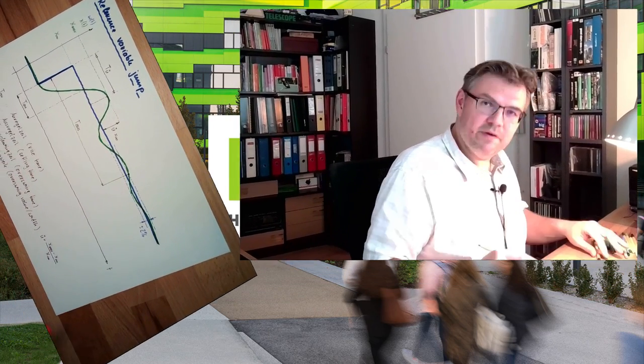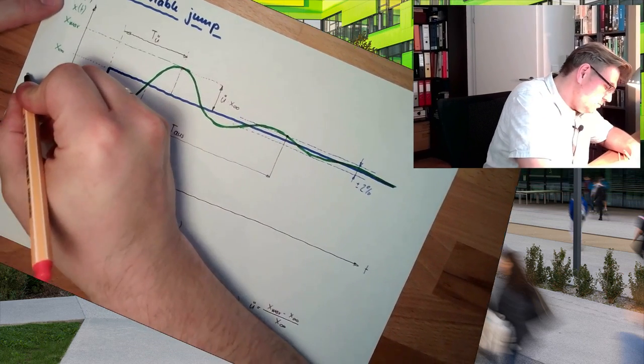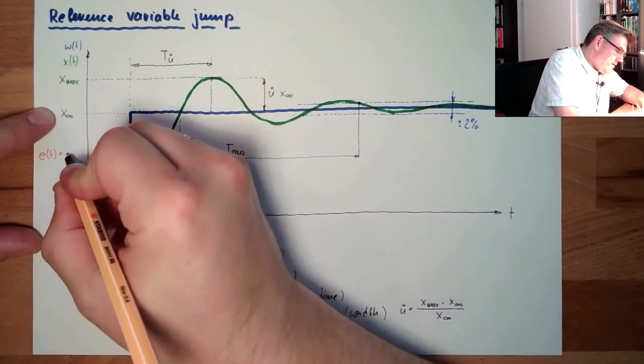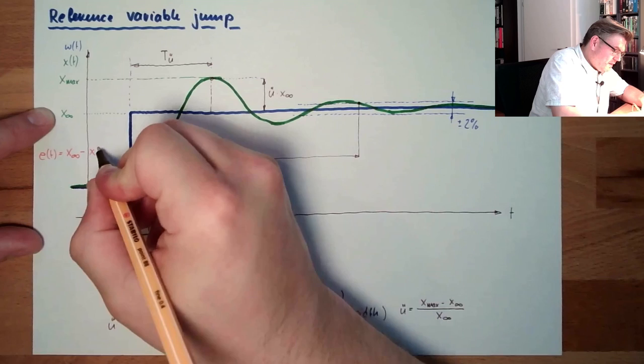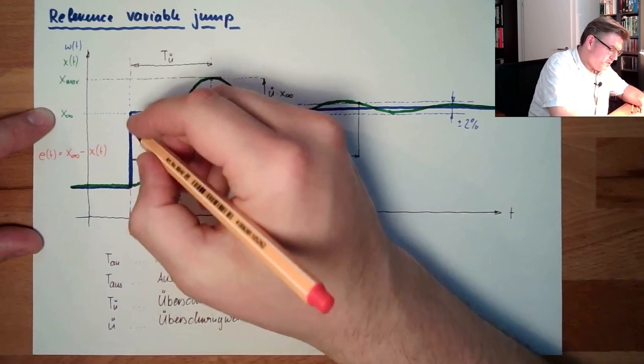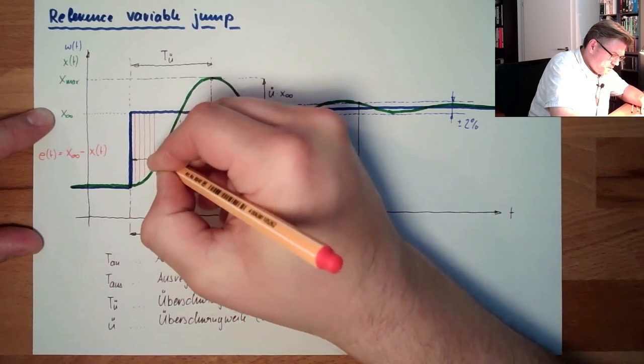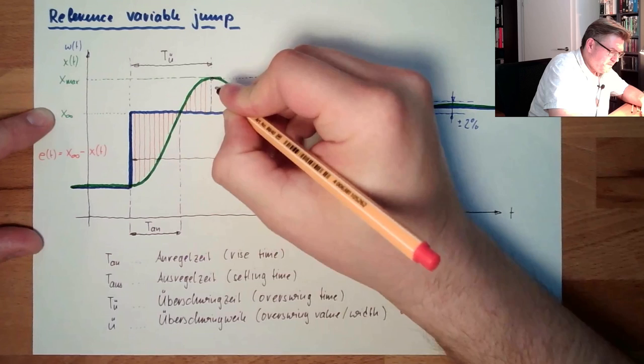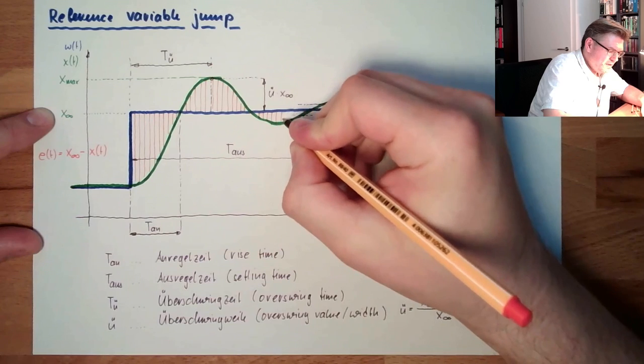Here, this is the drawing from last time. We are looking at the reference variable jump. And of course, there is an error. This error from T is the static end value minus the current value. So actually, these areas, this is the error. And as you can see, sometimes this error is positive, sometimes it is negative.